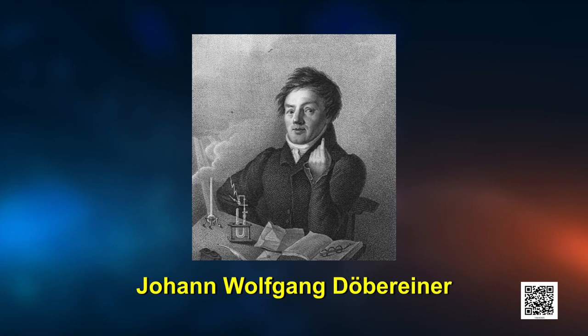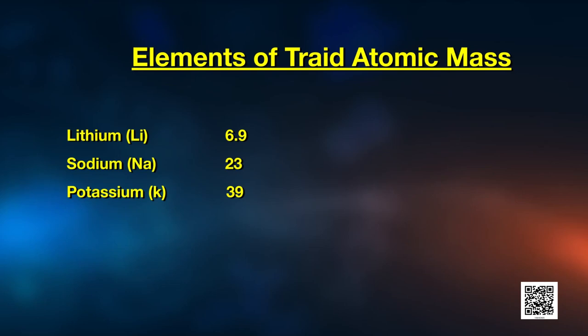In the year 1817, Johan Wolfgang Dobereiner, a German chemist, tried to arrange elements with similar properties into groups of three, called triads. Lithium, sodium, and potassium are metals — they react with water to form alkalis and hydrogen gas, and all have a valency of one. He showed that when three elements in a triad were written in order of increasing atomic masses, the atomic mass of the middle element was roughly the average of the atomic masses of the other two.